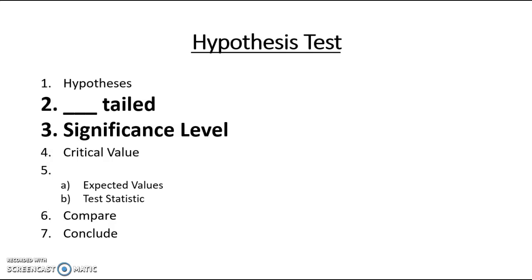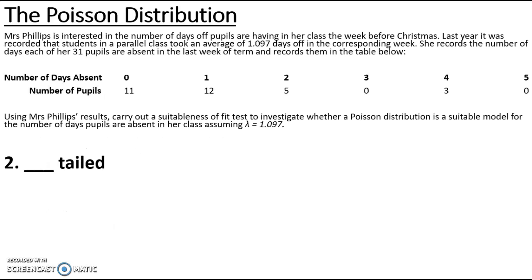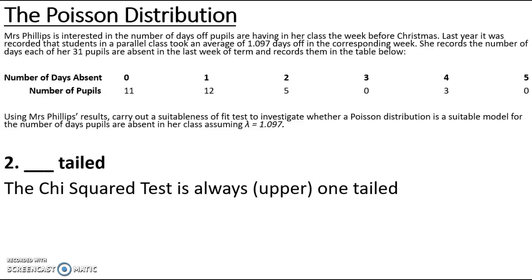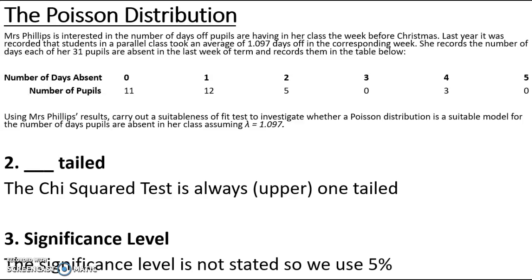Steps two and three are stating whether it is one or two tailed and the significance level. When doing a chi-squared test it is always one tailed, looking at the upper 0.95 if it's a five percent test. The significance level is not stated in this question, so we make the assumption that we're using a five percent significance level for A level.